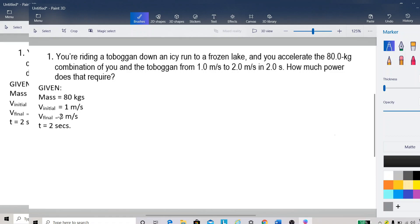So we first write down the given. We are given the mass which is 80 kilograms, the initial velocity to be one meter per second, the final velocity to be two meter per second, and t, time is two seconds.